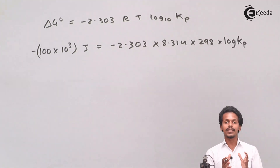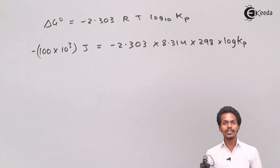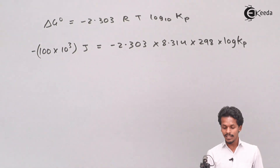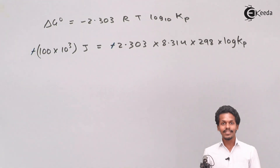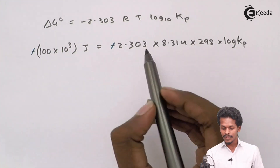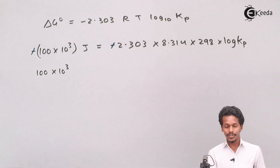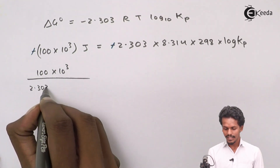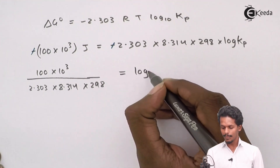Now I will find the value of log Kp by substituting these values. A short precaution: the negative signs can cause confusion, so let us eliminate them carefully. Dividing both sides, we write: (100 × 10³) / (2.303 × 8.314 × 298) = log Kp. The signs cancel and we proceed to calculate the right-hand side.